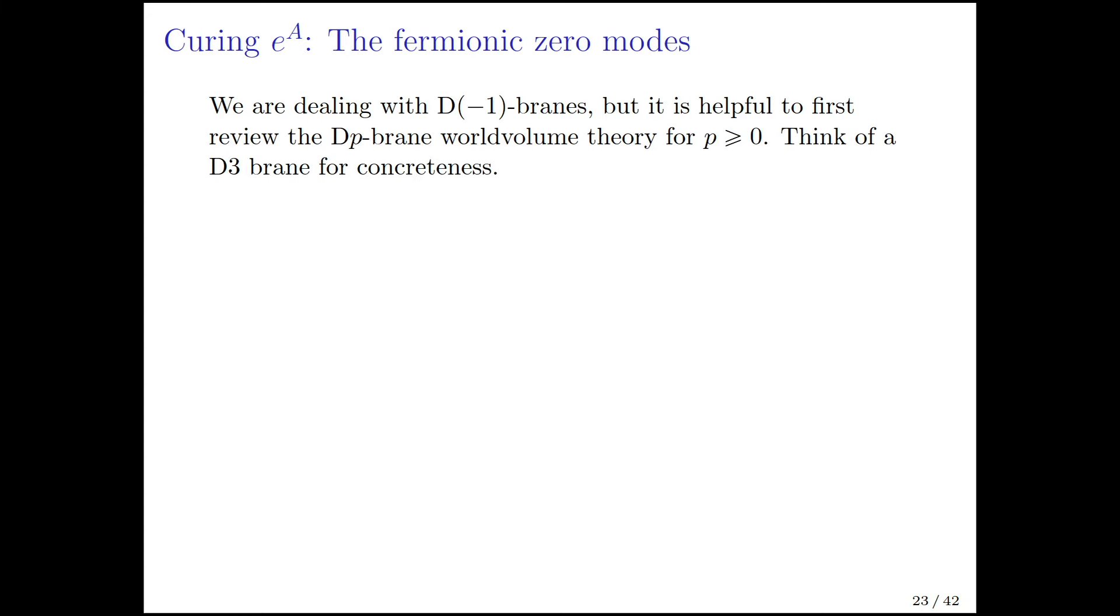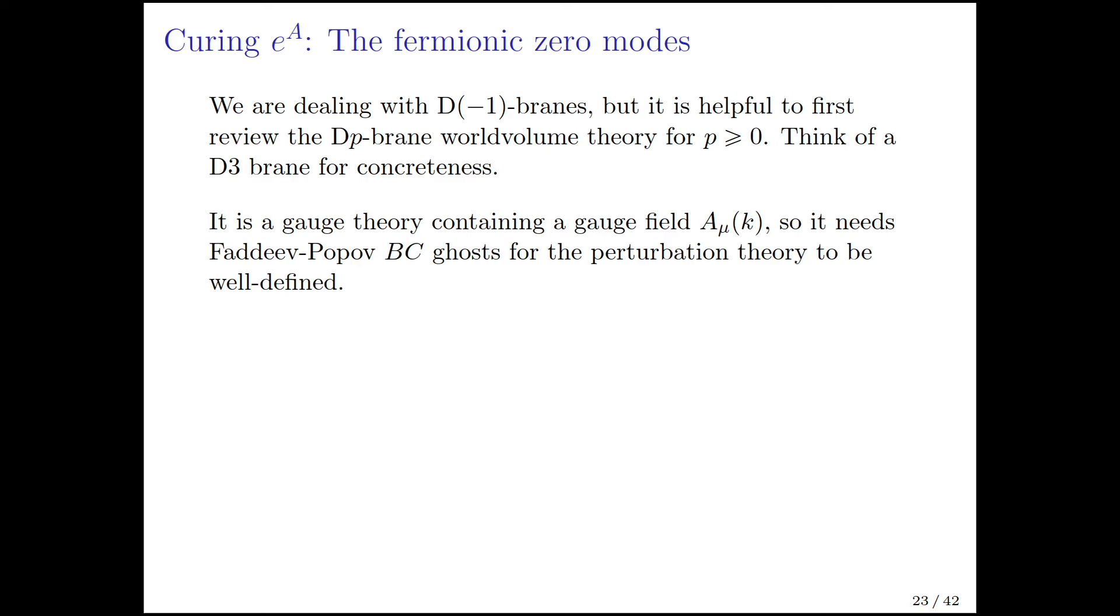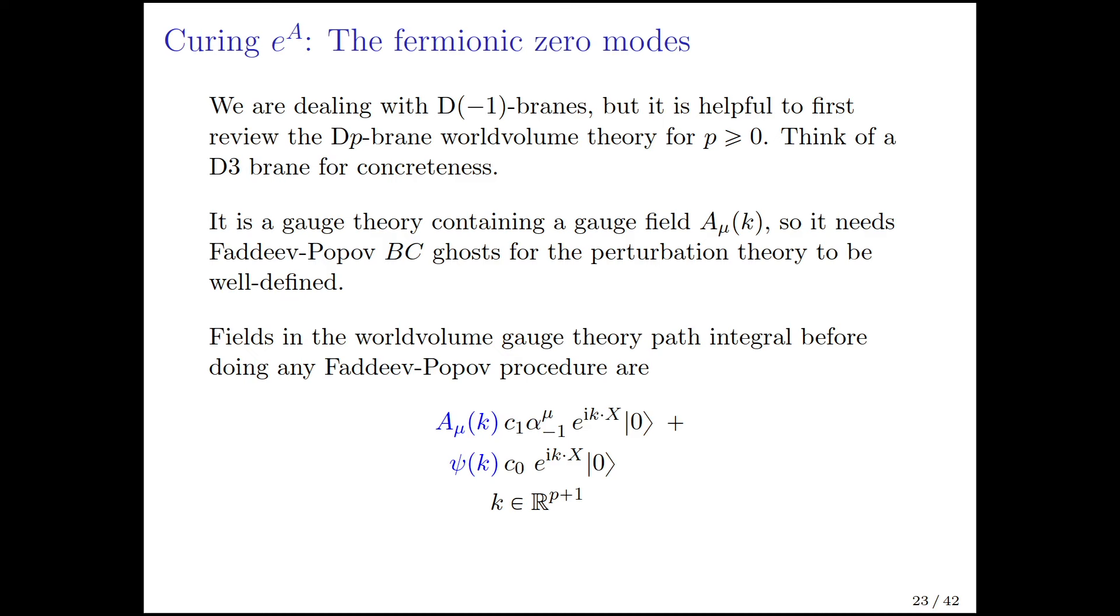Now we have this minus 2, which is these fermion zero modes. We are dealing with D minus 1 branes, but it's helpful to first review the Dp worldvolume theory for p bigger than or equal to 0. Think of a D3 brane for concreteness, where the gauge theory would be some 4D gauge theory. It's a gauge theory that has an A mu of k field, so you need Faddeev-Popov BC ghosts for the perturbation theory to be well-defined. Before you do any Faddeev-Popov, the A mu of k field multiplies that particular string vertex operator with c1 alpha minus 1, but there's another field which is often not written, which is the psi of k field. It multiplies just c0. It's a scalar from the point of view of the D-brane worldvolume theory, but it's there. This k is just momentum valued in R^{p+1}.